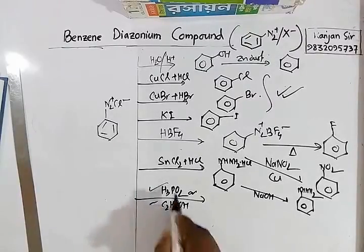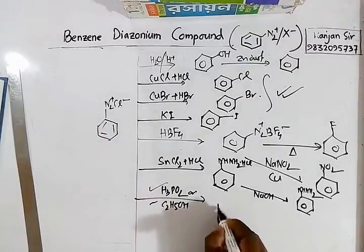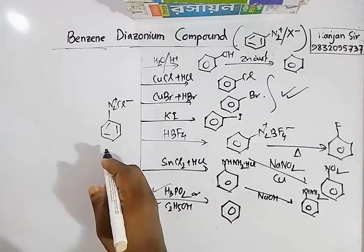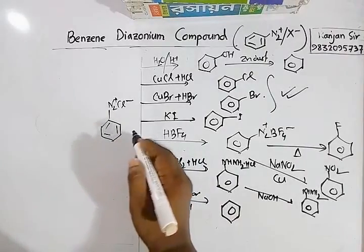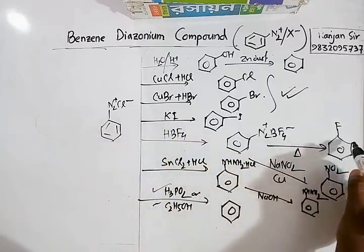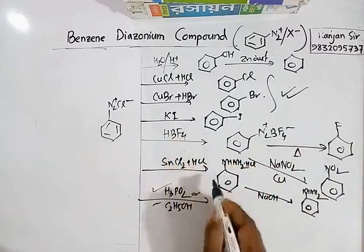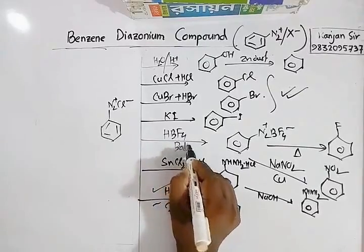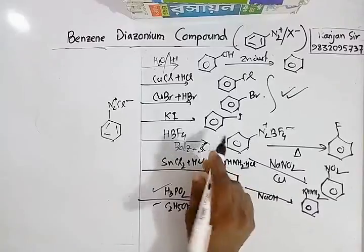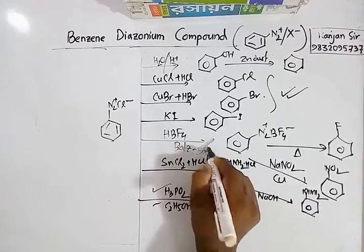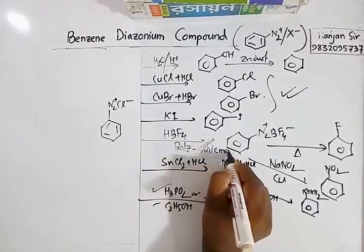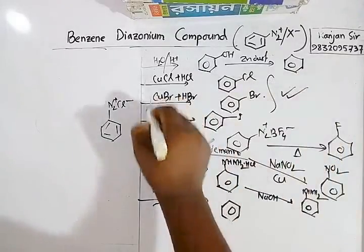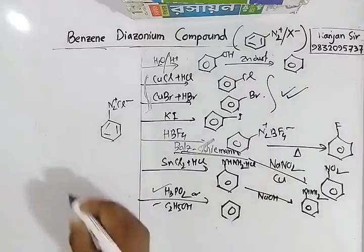The diazonium group can also be removed using hypophosphorous acid (H3PO2) or ethanol (C2H5OH), and you will get benzene. The reaction by which fluorobenzene is prepared is called the Balz-Schiemann reaction (B-A-L-Z-S-C-H-I-E-M-A-N-N), while the chloro, bromo, and iodo reactions are Sandmeyer reactions.